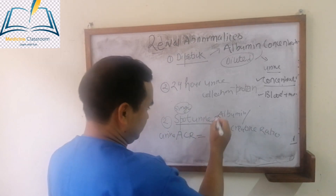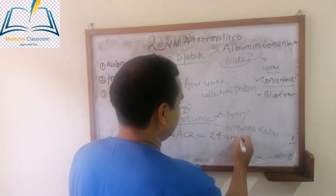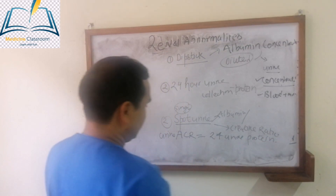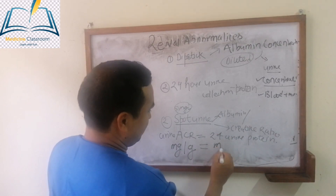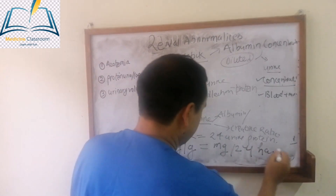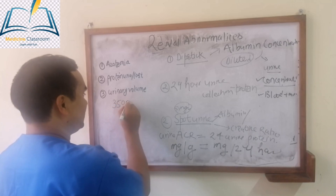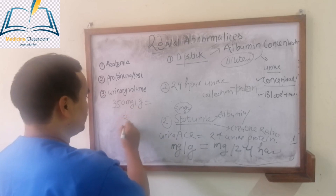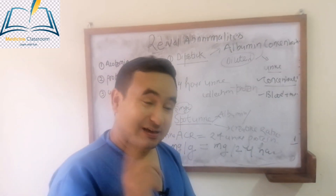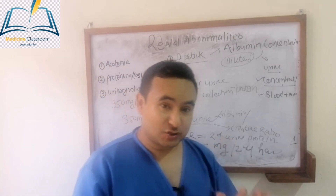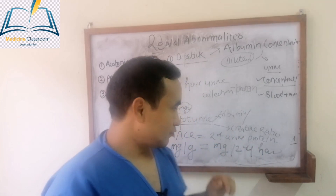This spot urine ACR is equivalent to the 24-hour urine protein. If you calculate the ACR in milligrams per gram, then it will correspond to milligrams in 24 hours. For example, if you calculate a spot urine albumin-to-creatinine ratio of 350 mg/g creatinine, then it is equal to approximately 300 milligrams of protein in a 24-hour sample. So from a single sample you can estimate the 24-hour urine protein, which is quite easy for the patient.